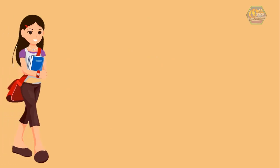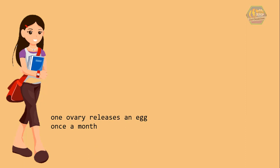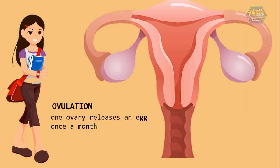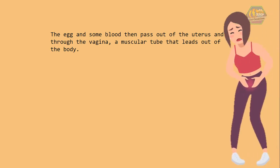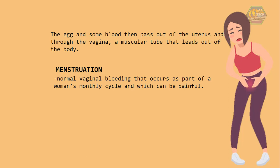When a girl is about 12 years old, one ovary releases an egg once a month. This process is called ovulation. The egg travels from the ovary through the fallopian tube to the uterus. If that egg does not meet a sperm cell on its journey, it dies. The egg and some blood then pass out of the uterus and through the vagina, a muscular tube that leads out of the body. This is relatable to some girls that go through menstruation.